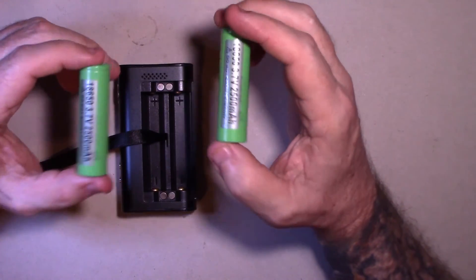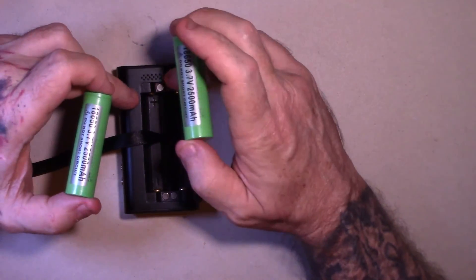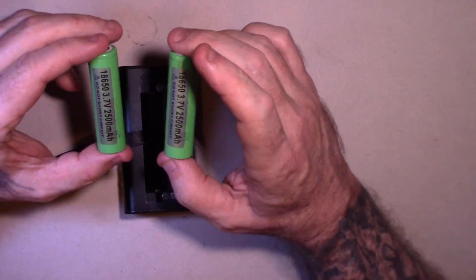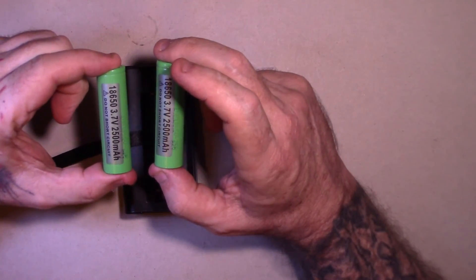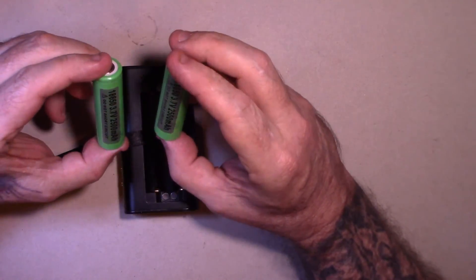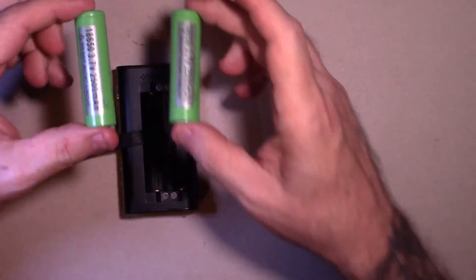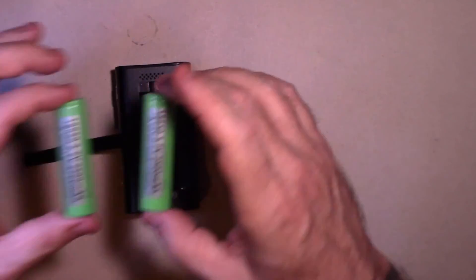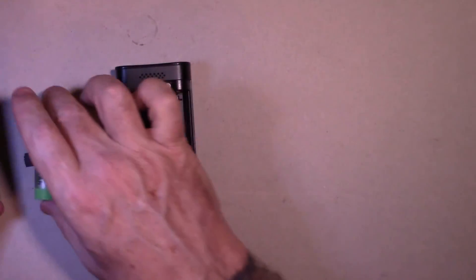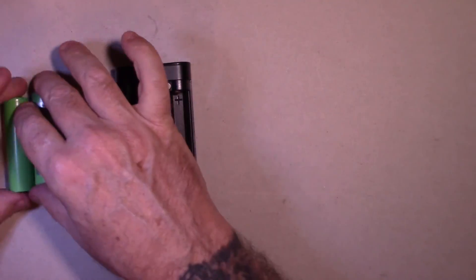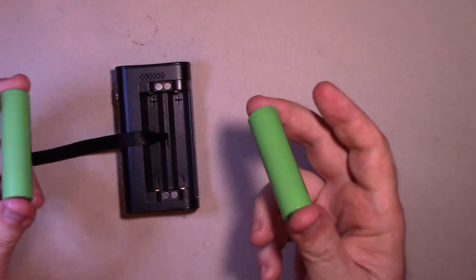If you get a mod that you can swap the batteries out, my suggestion would be to get a smart charger. That way you can always have batteries charging, batteries being used. When these die, swap them out. Get the ones out of charger, put these in the charger, and you have a rotation.